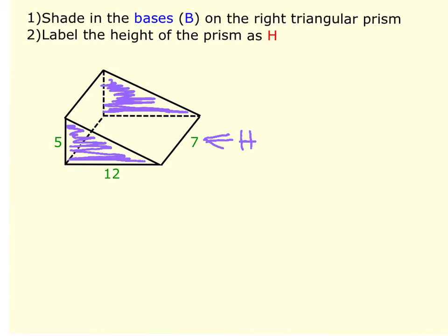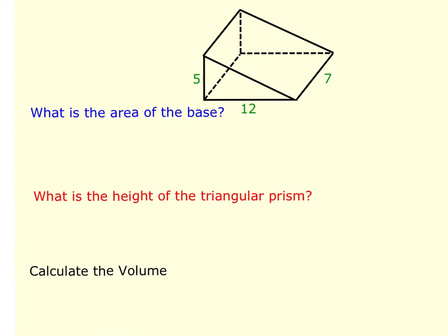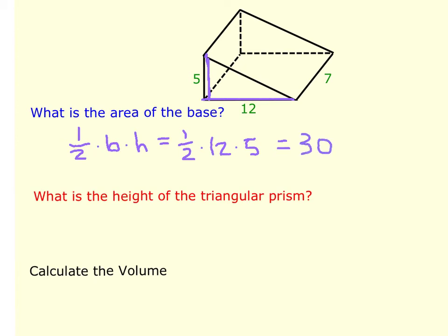Moving on to numbers 3 and 4, we calculate the area of the base. Because the base is a triangle, the formula is one-half times base times height. The base of this triangle is 12 and the height of the triangle is 5, so it's one-half times 12 times 5, which gives us 30 square units.